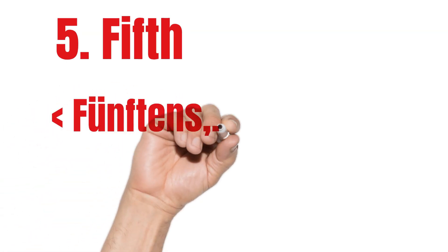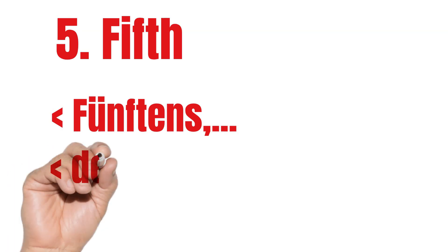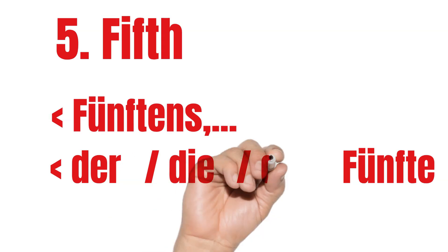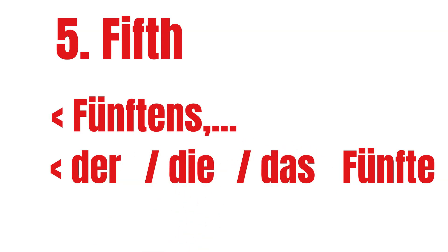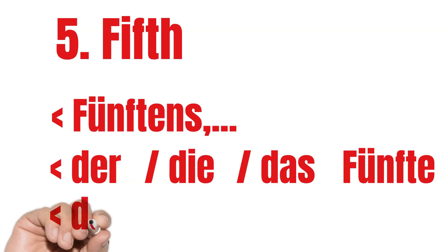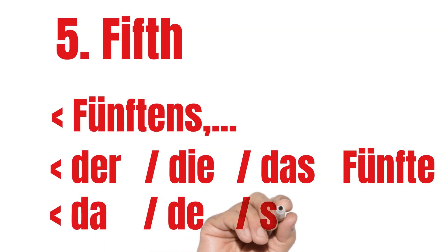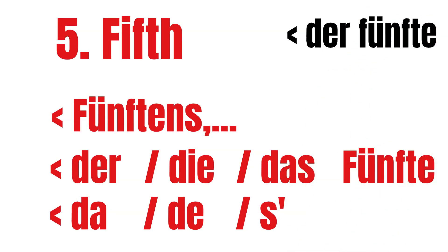Fifth. With articles: der Fünfte, die Fünfte, das Fünfte. In Austrian German dialects: der Fünfte, die Fünfte, das Fünfte. When we look at months, the 5th of May is der Fünfte Mai.